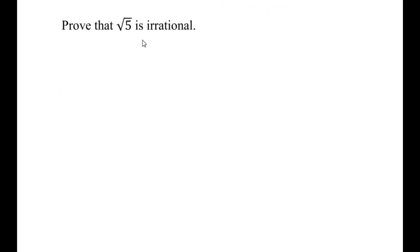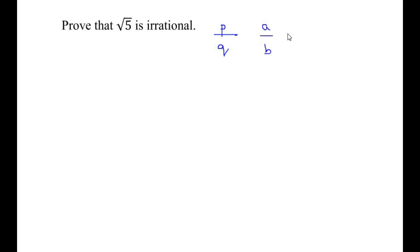Prove that square root of 5 is irrational. Irrational numbers are the ones which cannot be written in the form p over q — that is like a fraction. You can know more details about rational and irrational numbers by clicking on the link in this video, where I have discussed these types of numbers in detail.